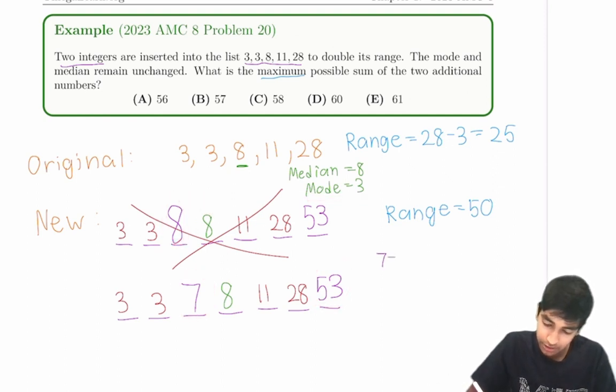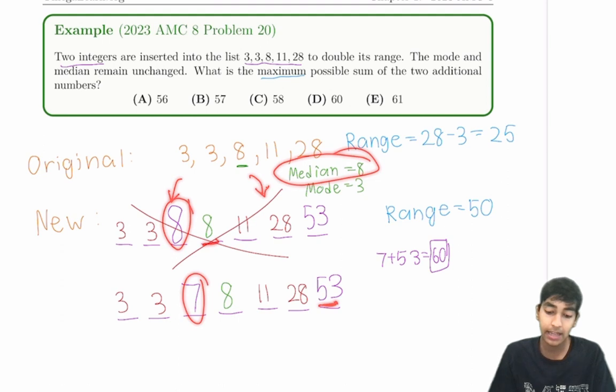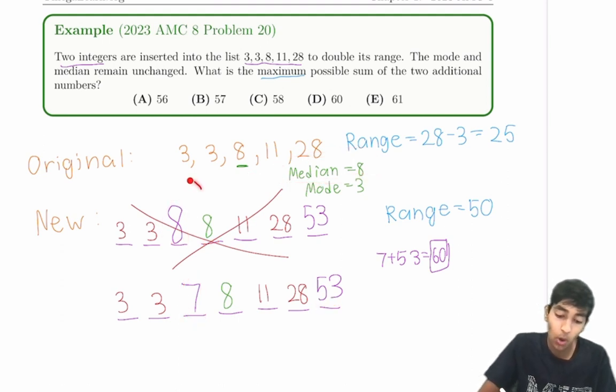So therefore, our answer is just 7 plus 53. And now to quickly summarize what we did, first we essentially found that median's 8, that's restrictive, and that means one number must be inserted on the left side, and one number on the right side. We saw that it can't be 8, so it has to be 7, and that does work, and is the maximum value. Where the key idea here being that one number must go on each side of the median.